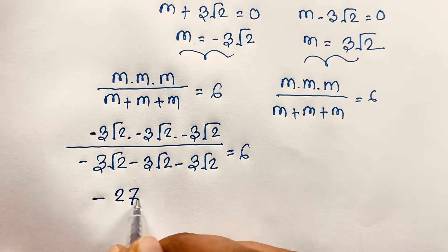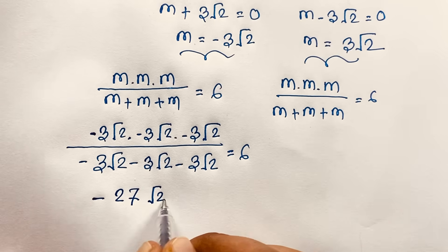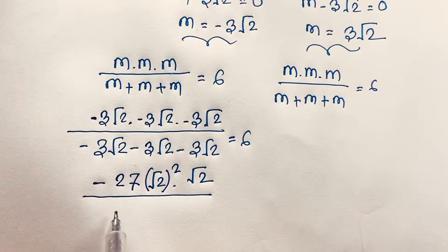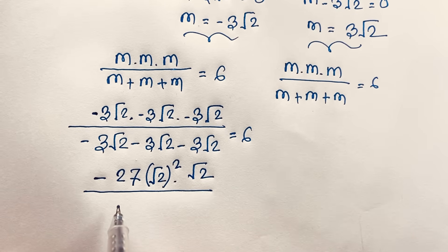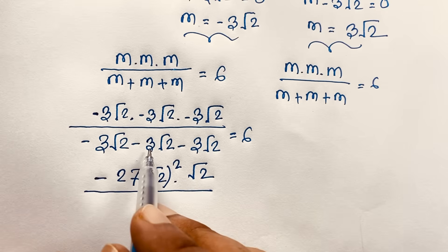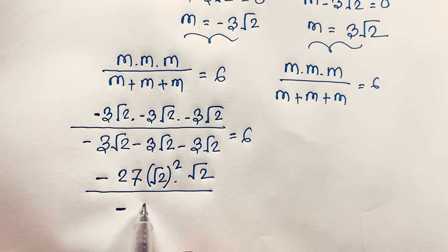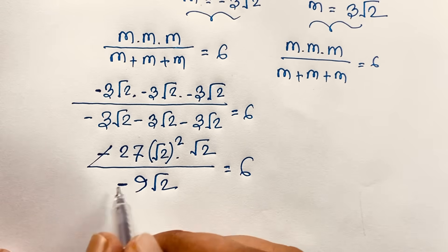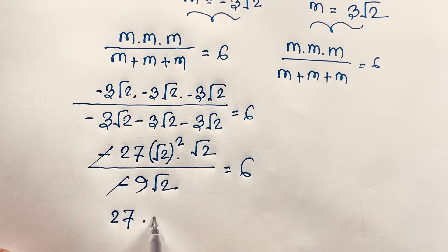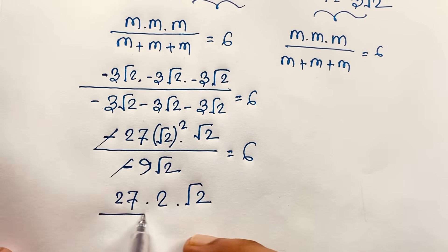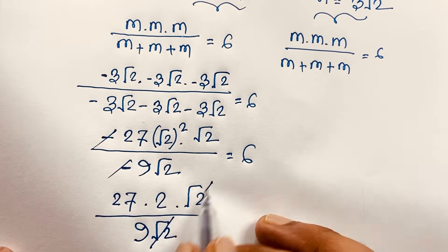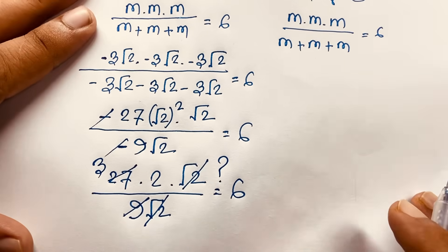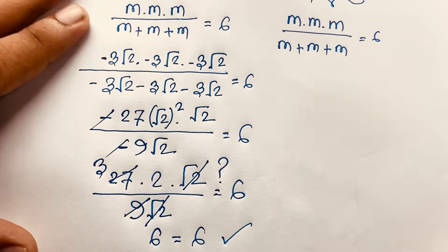We have 27 times (√2)³. I take one factor of √2 separately: so it's 27 times 2 times √2 over 9√2. Square root 2 cancels out, giving 27 times 2 over 9. Then minus minus cancels, so we get 54 over 9, which is 6. Then 3 times 2 equals 6 — left hand side equals right hand side, which is 6. Verified!